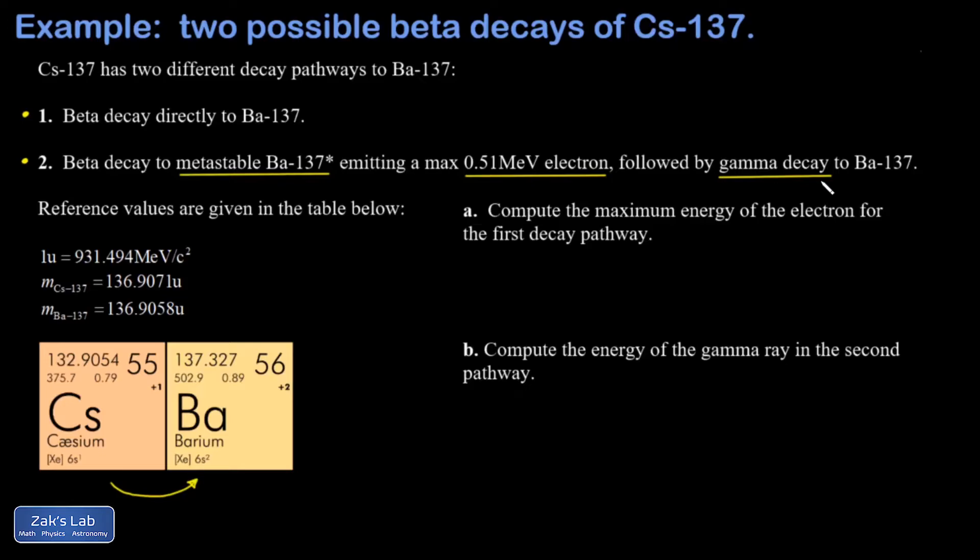Now we're given a list of reference values here. We have the atomic mass unit in MeV per c squared, and we have the mass of a cesium-137 atom given in atomic mass units and the mass of a barium-137 atom given in atomic mass units.